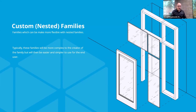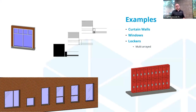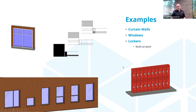I'm going to show you a couple of examples of how these families work with nested content. I'll go through three examples: curtain walls showing the three different detail levels of view and how they change; windows — one window family that can do all these different window types, easily swappable because we're nesting in different types; and third, locker arrays using nested families to do multi-directional arrays.